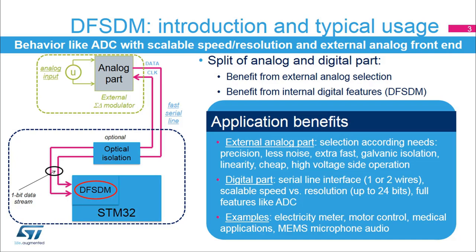The digital part, represented by the DF-SDM peripheral, performs digital signal processing from external data. Therefore, it offers a scalable ratio solution between speed and resolution, but also additional functionality integrated in standard built-in ADC, like analog watchdogs, injected and regular conversions, flexible triggering system, break signal generation, and extreme detector.